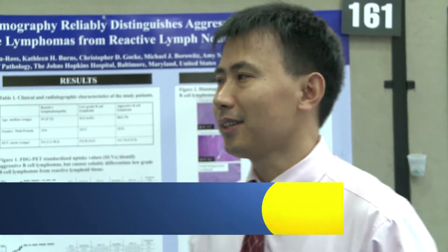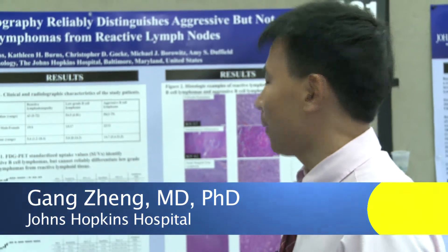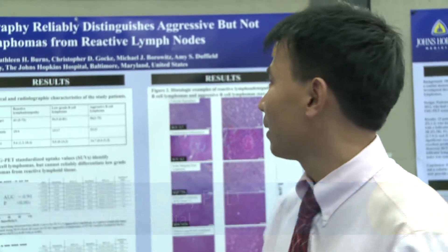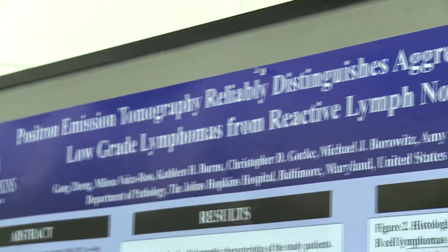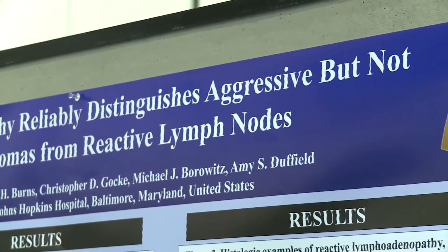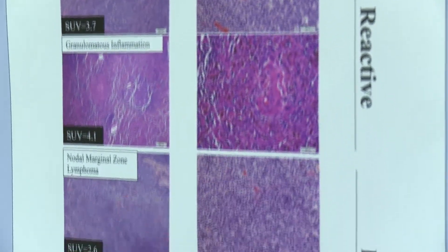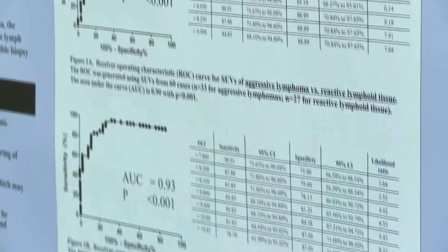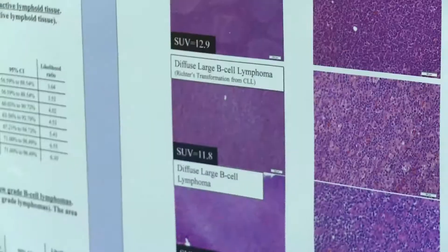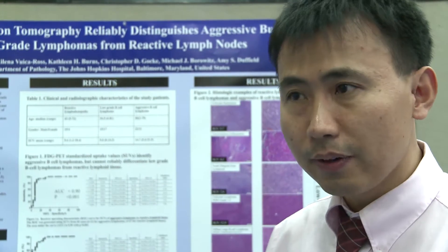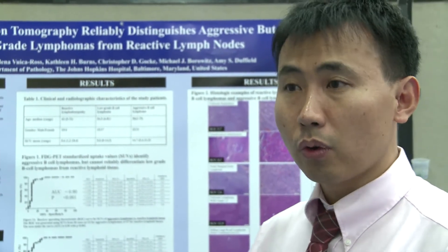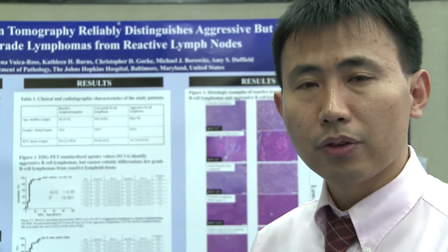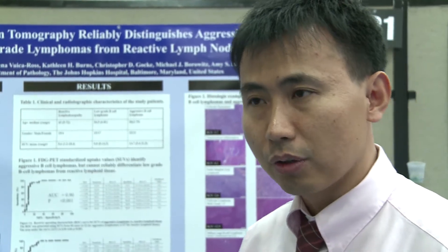I'm here from Josh Hawkins to present my poster. The title of my poster is: PET can reliably distinguish aggressive but not low-grade lymphoma from reactive lymphoid tissue. PET is commonly used for the staging of lymphoma, and SUV stands for the standard uptake value. Here we try to see whether SUVs can be used to distinguish aggressive lymphoma versus low-grade lymphoma, and aggressive lymphoma versus reactive lymphoid tissue.